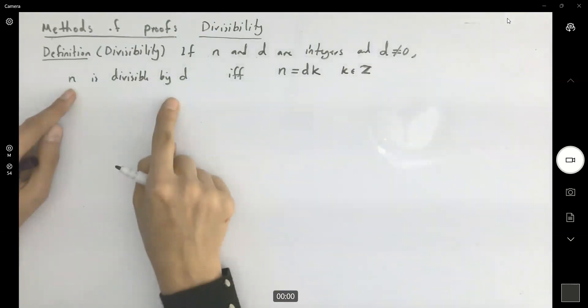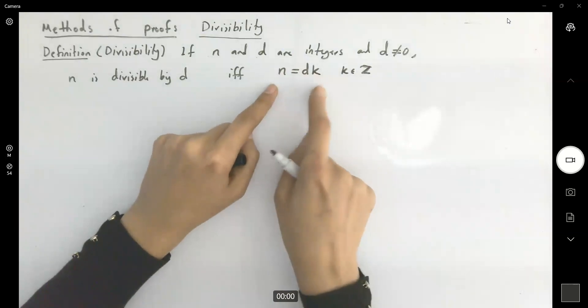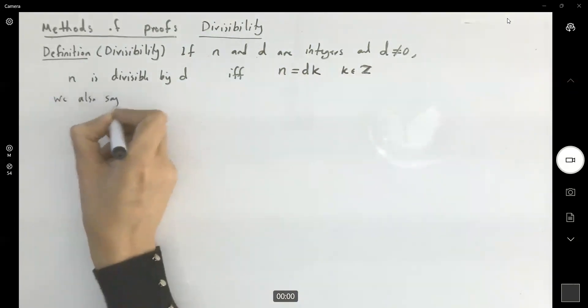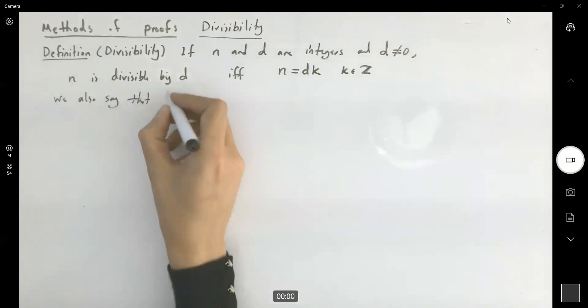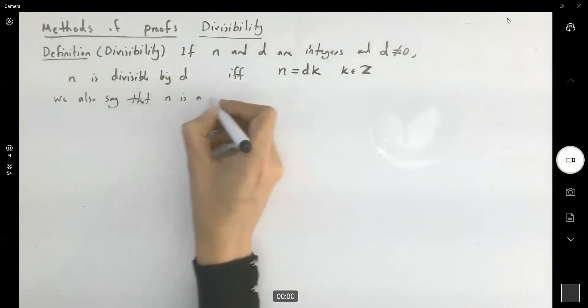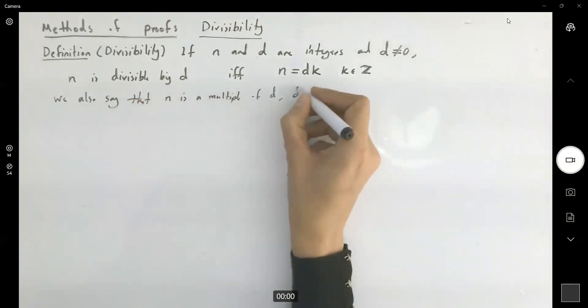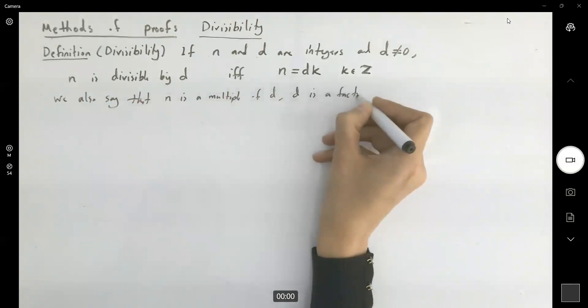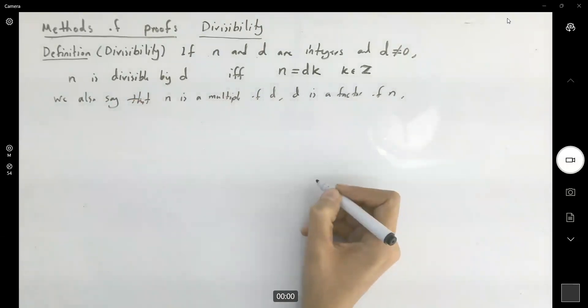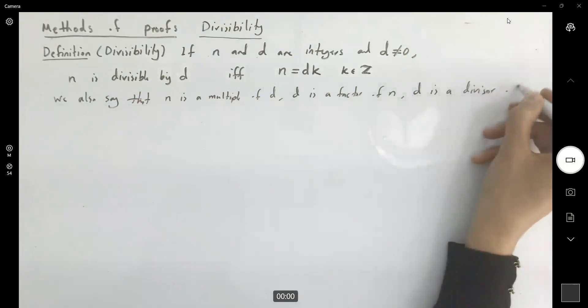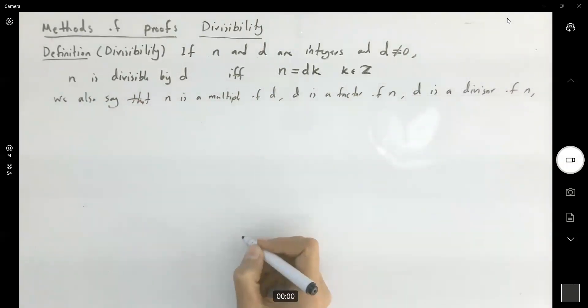So n is divisible by another integer which is not 0 if and only if n can be written as the multiplication of d and another integer. In that case, we say that n is a multiple of d, d is a factor of n, d is a divisor of n, and d divides n.